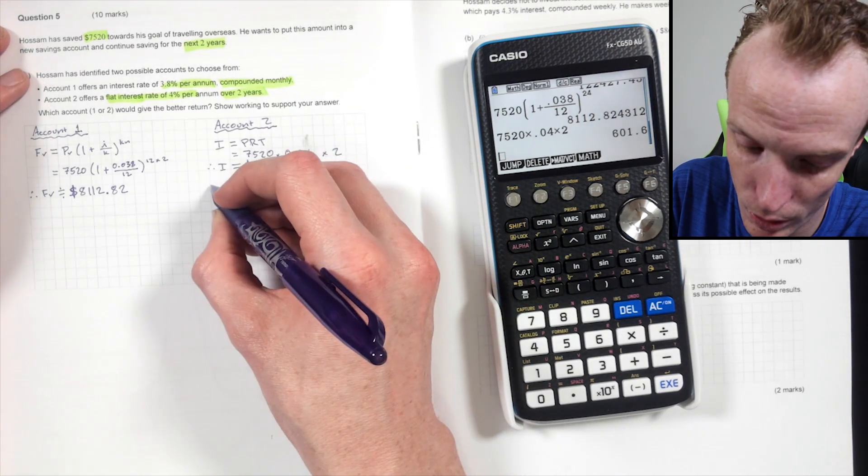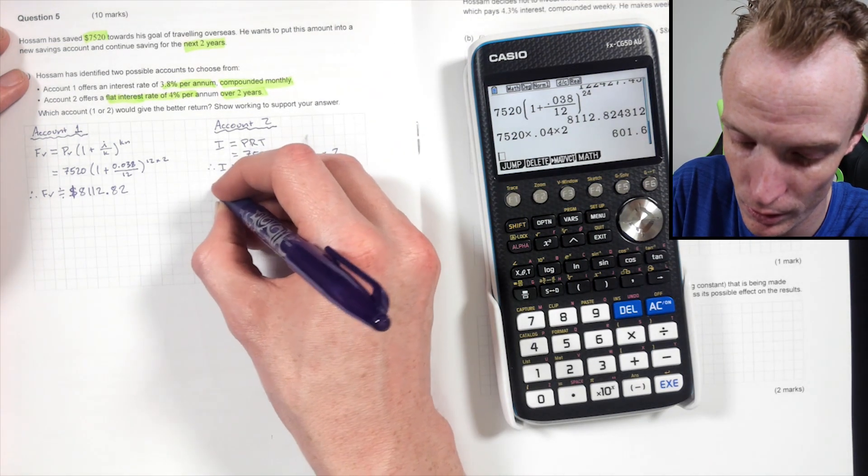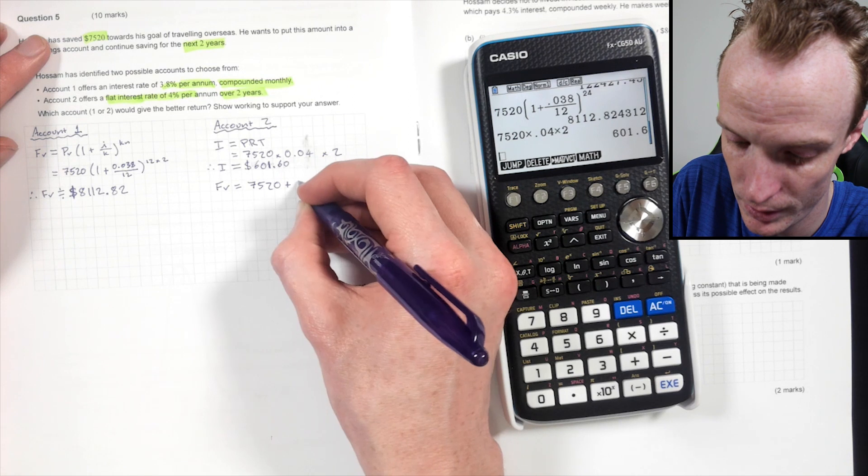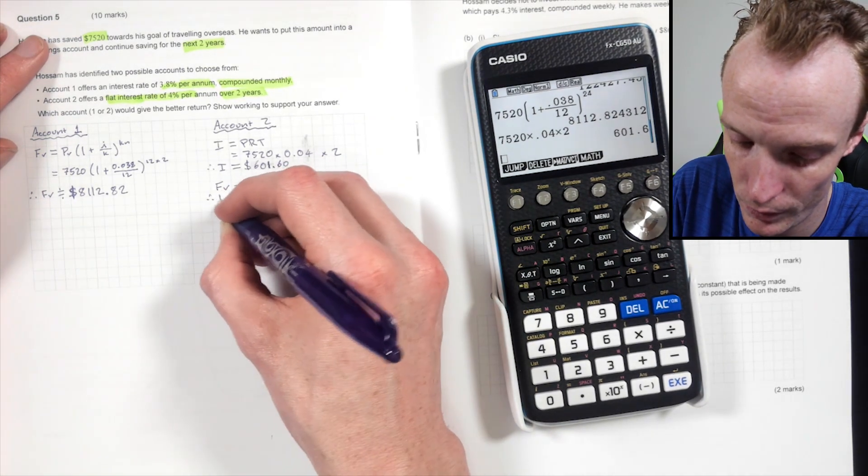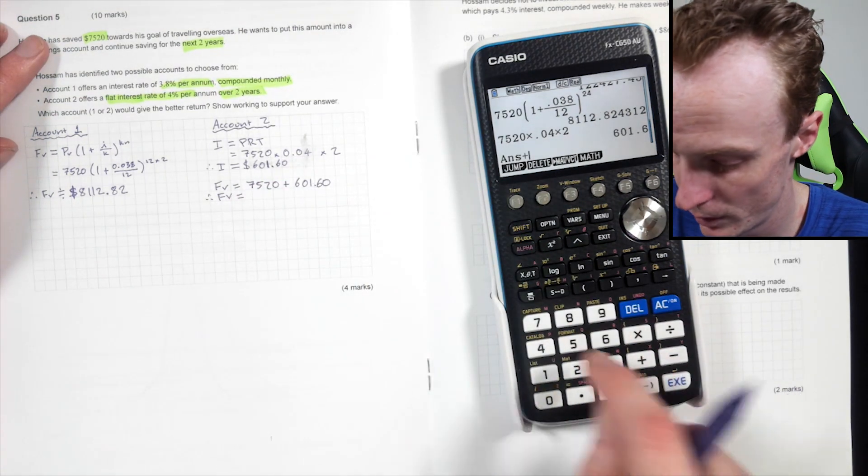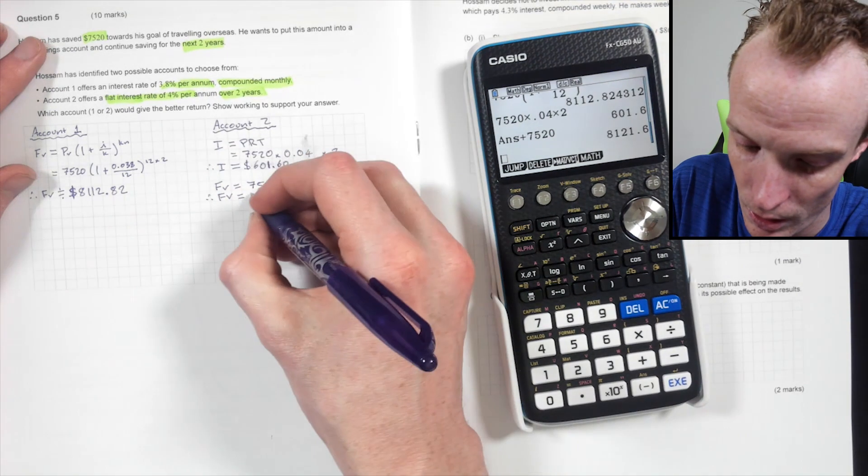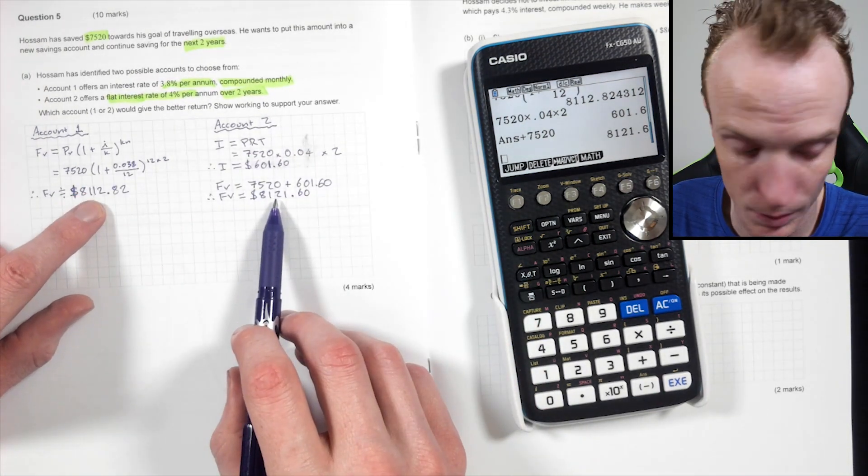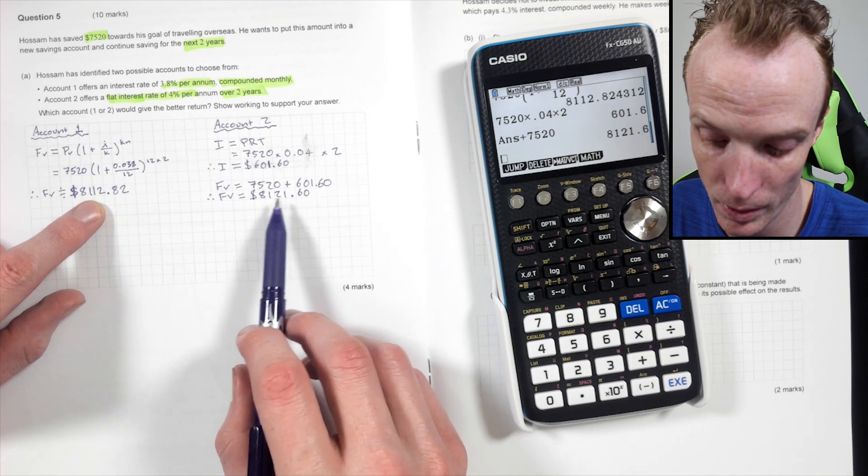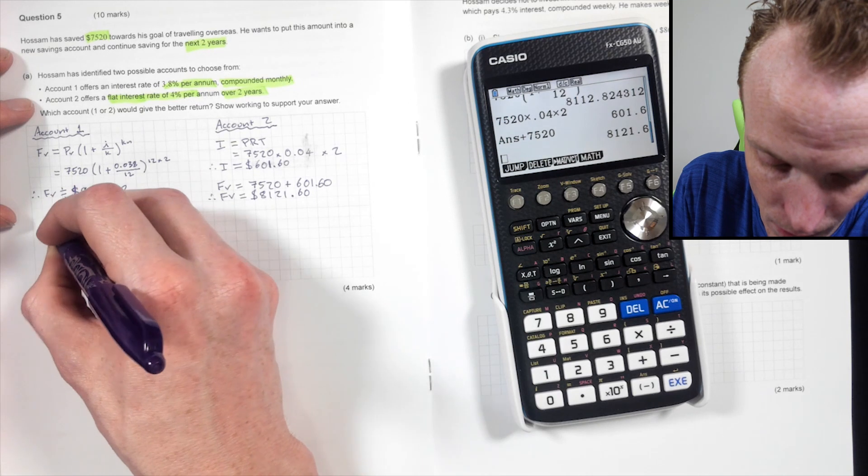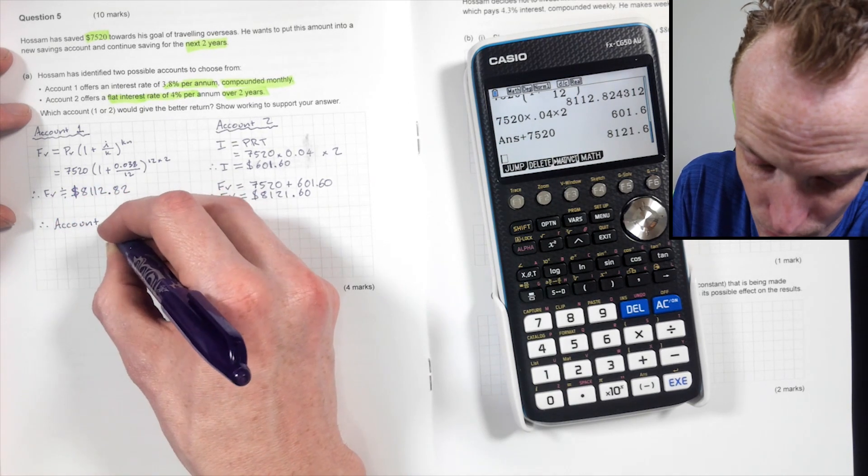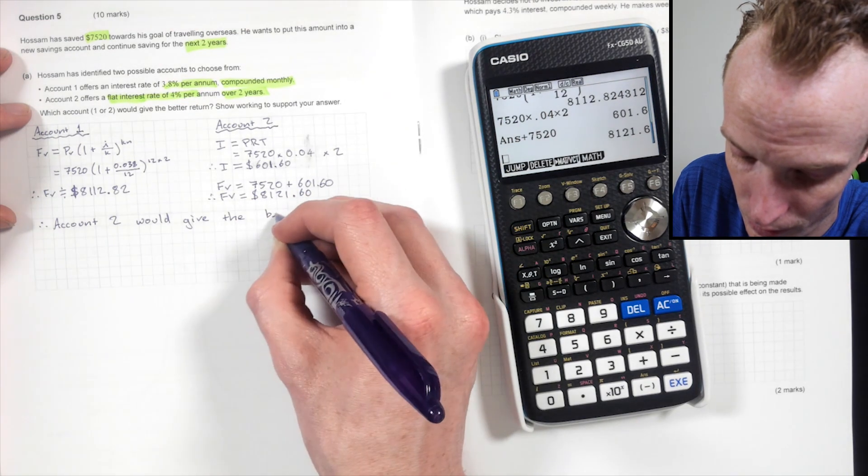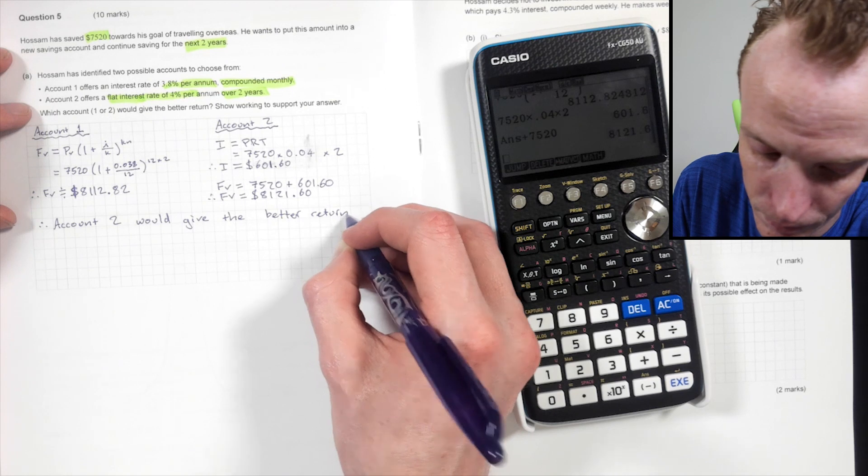Then you're, what am I doing? That's my interest. So my future value, so future value will equal my present value. So 7520 plus the 601.60. So therefore the future value will equal $8,121.60. And now you compare it. So this one here suggests that account two will give the better return. So therefore account two would give the better return over two years.